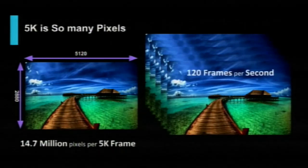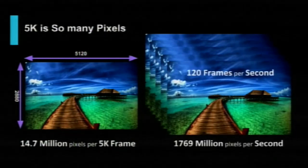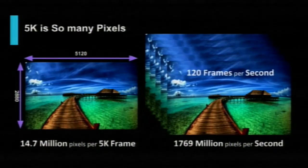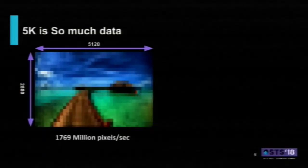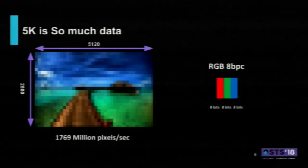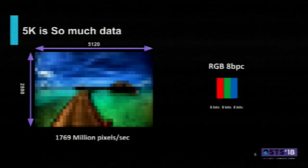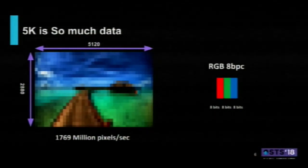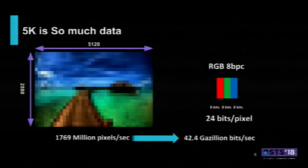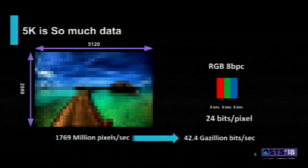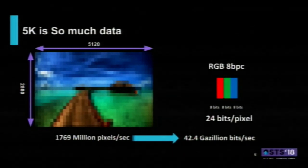Let's consider a 5K frame — just one frame, it's almost 41.5 million pixels. When you start streaming it at higher frame rates, say 120 frames per second, it adds up fast to 1769 million pixels per second. That's a lot of data. Considering basic RGB at 24 bits per pixel, it adds up really fast to give 42.4 gigabits per second.